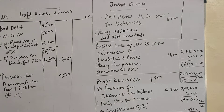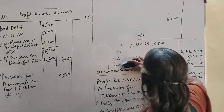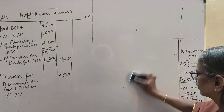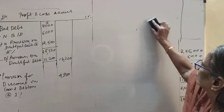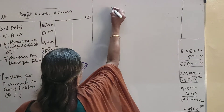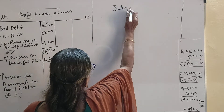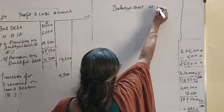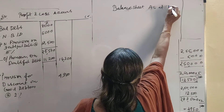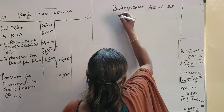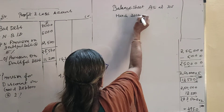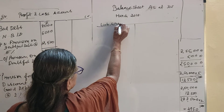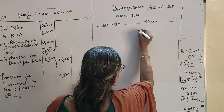Now, let us see the position in the balance sheet. We have completed the journal entries and the position in the profit and loss account. Next is the balance sheet position. Balance sheet as on — this is the position in the balance sheet.